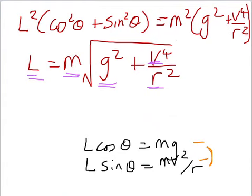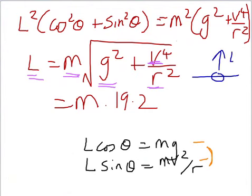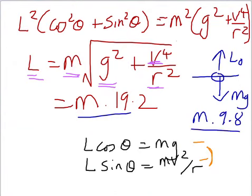Put numbers in. I did this on my calculator. And it comes out as M times 19.2. When the plane is flying horizontally, L0 is just going to be MG. So M times 9.8. So here we've got M times 19.2, which means that it's about twice the lift that's required when it's just flying horizontally.